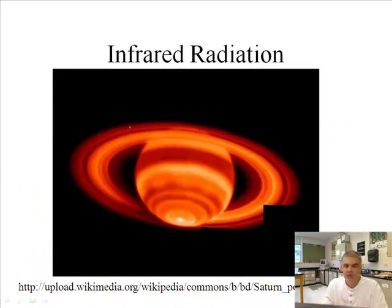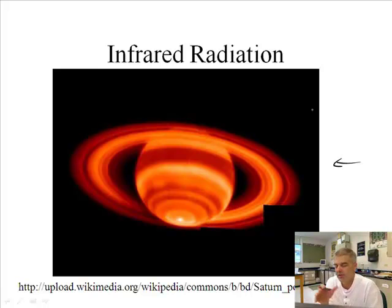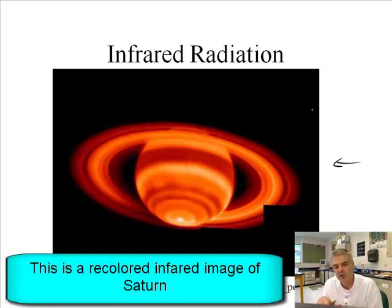So what are the different kinds? Well, the first one is infrared, I want to talk about briefly. This picture right here is a picture of Saturn in the infrared spectrum. Now, one of the problems with this is that you really can't see in the infrared spectrum, and so we recolor the image, so it makes it look.